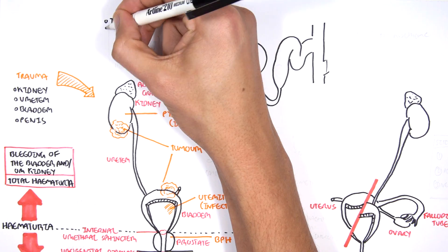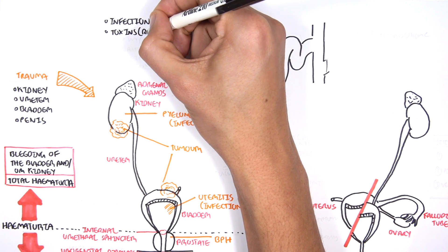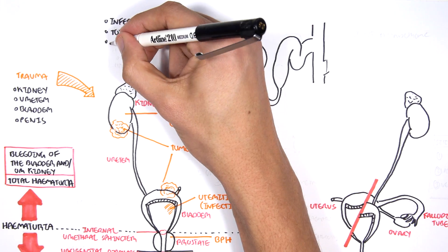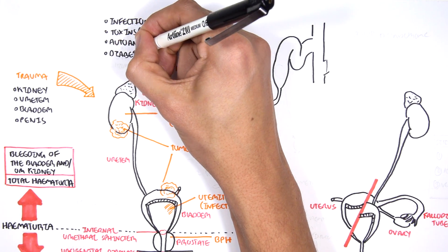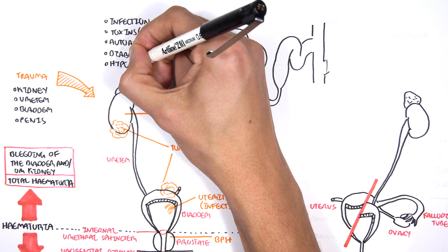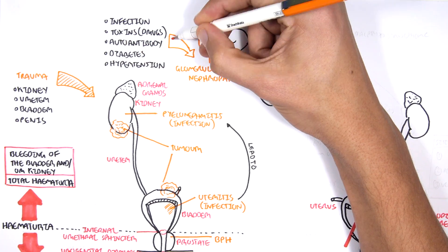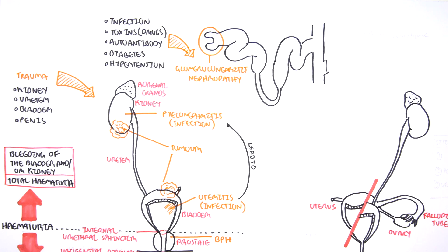A very common condition is known as glomerulonephritis or any nephropathy for that sake. Causes of glomerulonephritis include infections, toxins such as drugs, autoantibodies (so autoimmune disease), diabetes, and hypertension could also lead to glomerulonephritis which is a differential diagnosis for hematuria.